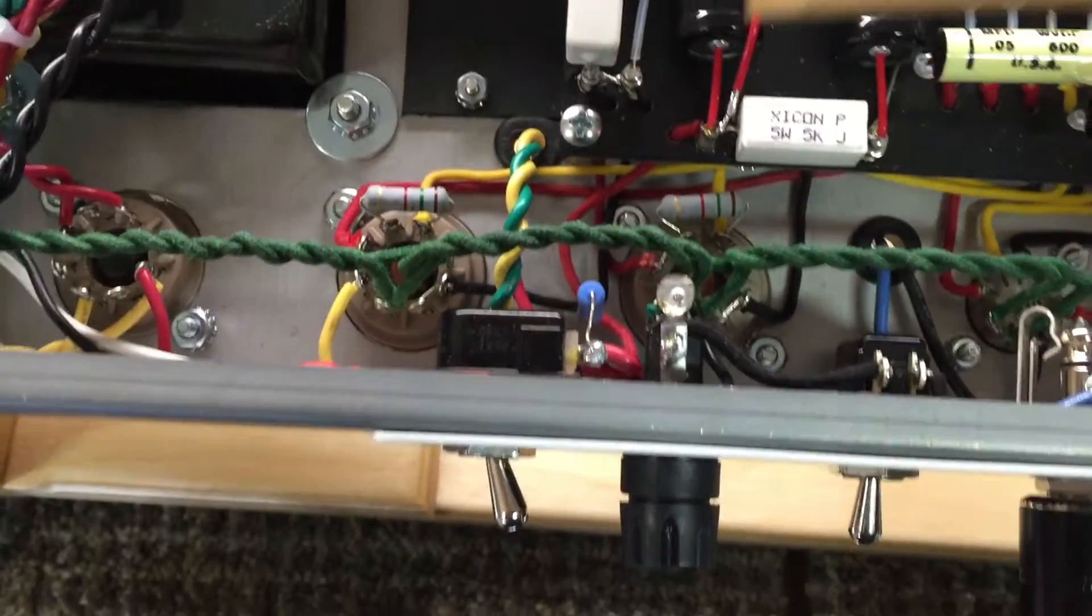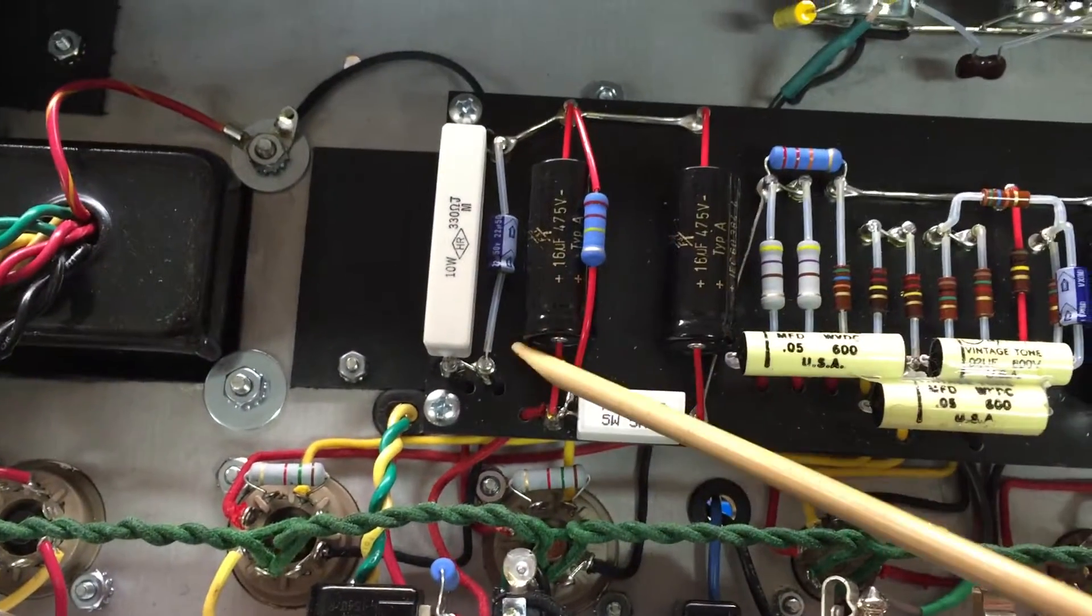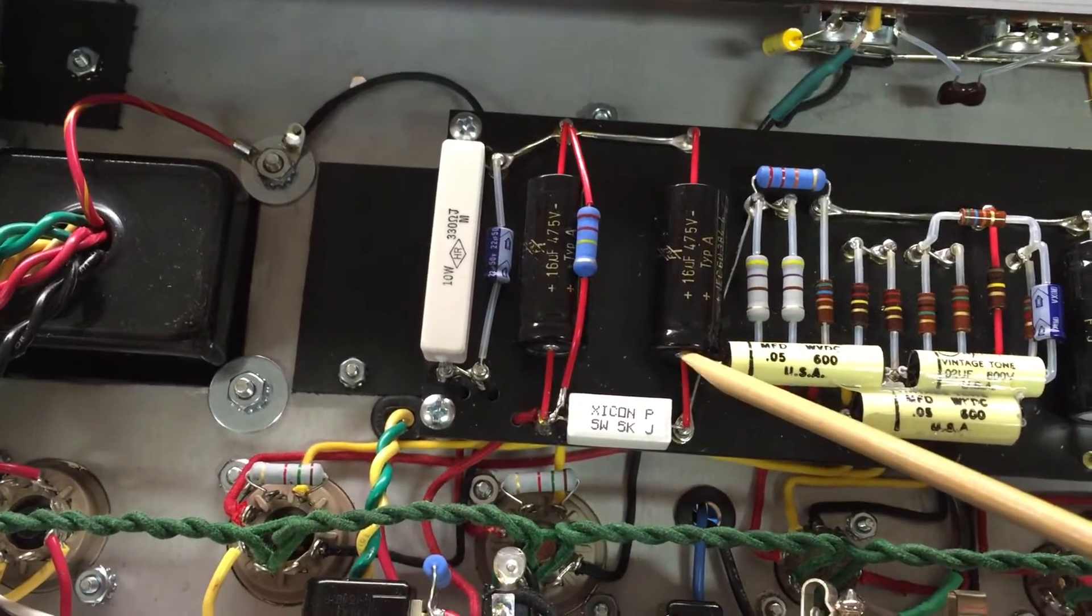This is a bleeder resistor. So what happens is when you turn the power off, these guys are going to have all kinds of voltage hanging in them, up to 410 volts.